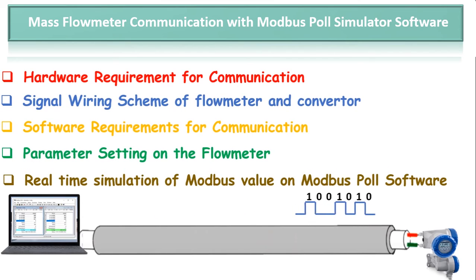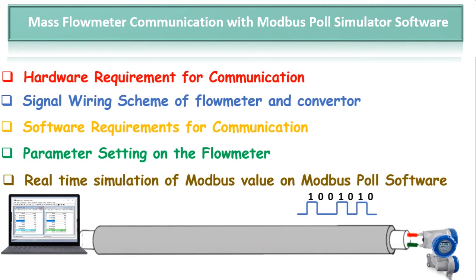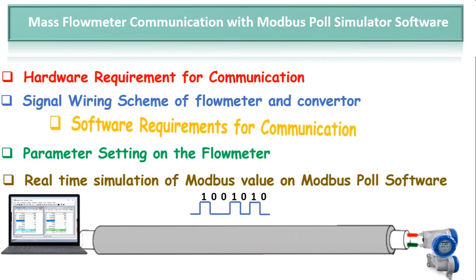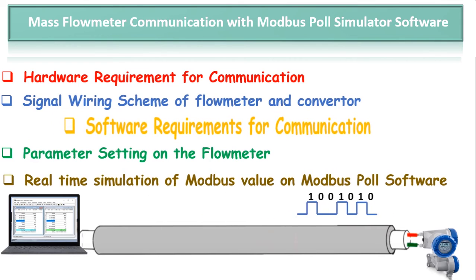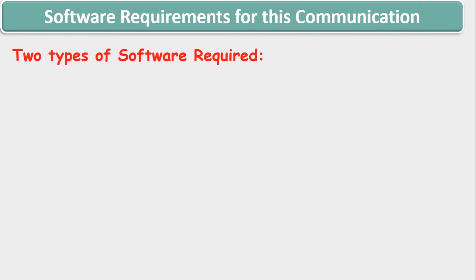As you have seen the signal wiring scheme at the flowmeter side and RS-485 converter side, we will now move to our next content — that is, the software requirement for this Modbus communication. Basically there are two types of software required in this communication.